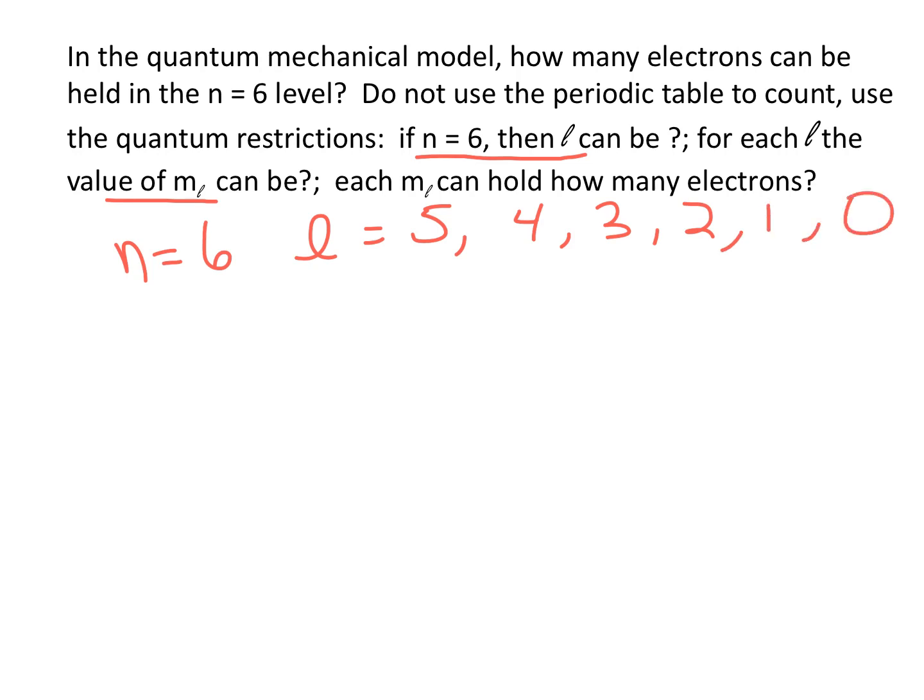The lower levels of l we're pretty familiar with. 0 corresponds to s orbitals, 1 to p orbitals, 2 to d, 3 to f. And then 4 to g and 5 to h, which are not on the periodic table, so we've never filled those sub-levels. That's why this is a theoretical question.